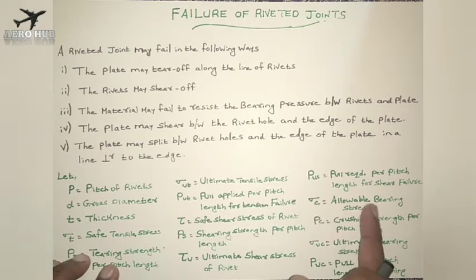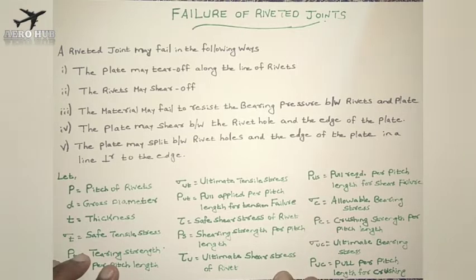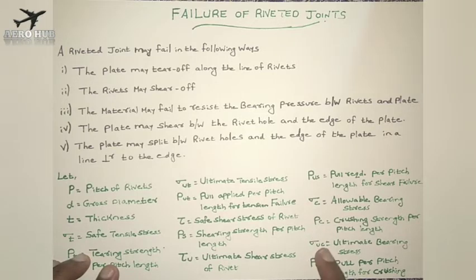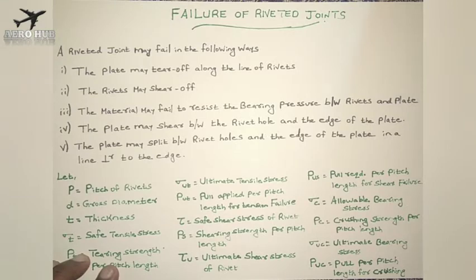Sigma_c is the allowable bearing stress or crushing stress — I can also write it as sigma_b, but here I am writing sigma_c. P_c is the crushing strength per pitch length. We are considering strength based on pitch length, that is between two rivets. Sigma_uc is the ultimate bearing stress. P_uc is the pull per pitch length for crushing or bearing failure. The design equation for bearing failure involves these terms, and by seeing the diagrams the types of failure and the design equations will be easy to understand.